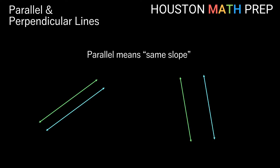Welcome back, everyone. Houston Math Prep here to talk to you about parallel and perpendicular lines and the equations of those lines. When we talk about parallel lines, that means the lines are running next to each other. They may be close together or far apart, but they never get closer or farther away from one another. They run the exact same direction — in other words, they slope the exact same amount. So they have the same slope.